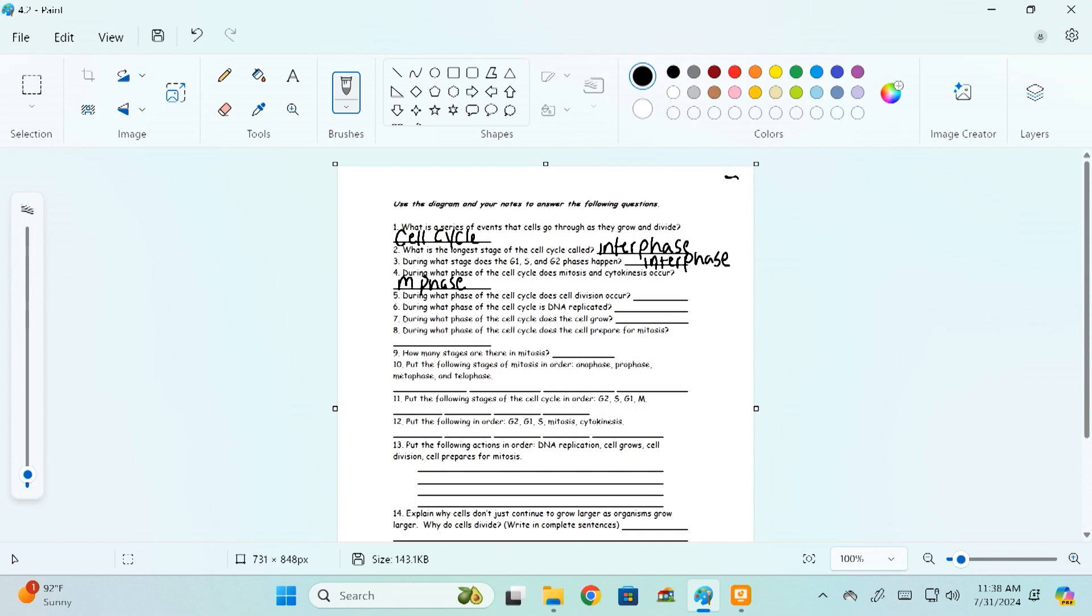All right, five, during what phase of the cell cycle does cell division occur? Okay, well, this is going to be the M phase again. Okay, cytokinesis and mitosis make up the M phase. What's happening in those two parts of the cell cycle is the nucleus divides and then the cytoplasm divides. So M phase is perfect for number five.